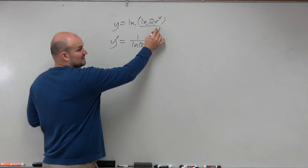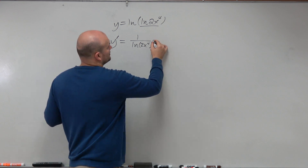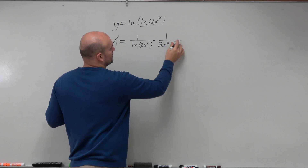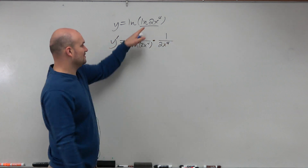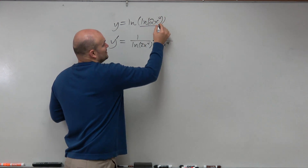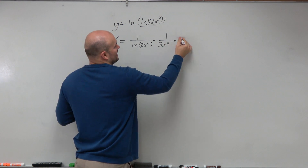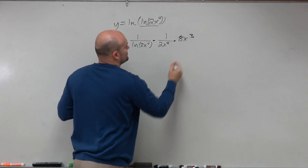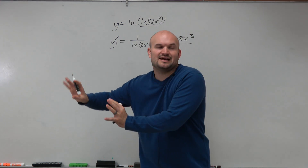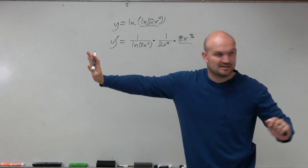Times the derivative of the inside. The derivative of ln of 2x to the fourth is going to be 1 over 2x to the fourth, because that's that inside function, times the derivative of that inside function, which is 8x cubed. And I like looking at it like this, because now it's much easier — I have my fractions together, I don't have complex fractions. I have basically everything as one fraction and I can just multiply straight across.